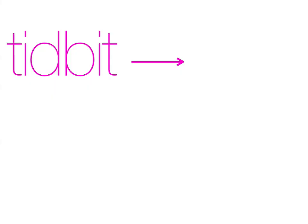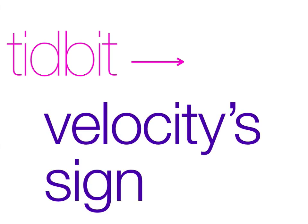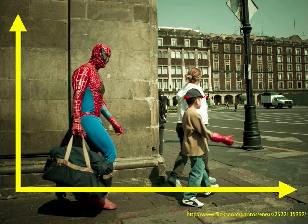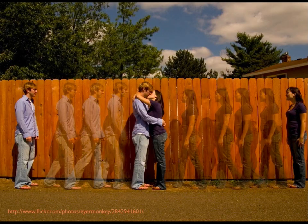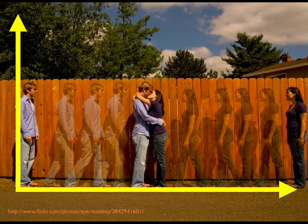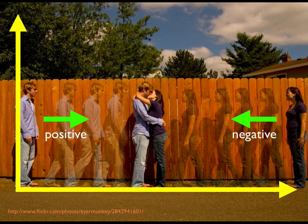So, initial velocity, final velocity, and average velocity. One more velocity tidbit that's important is the velocity sign. Using this picture of a Mexican sidewalk, we'll throw up x and y axes. If we focus on Spider-Man and the little boy, we see they're both walking in the same direction — when two objects move in the same direction, their velocities have the same sign. Spider-Man's velocity is positive and the little boy's velocity is positive. Looking at the next picture, the guy and the girl walk in opposite directions. When two objects travel in opposite directions, one has a positive velocity and the other has a negative velocity. The guy's velocity is positive and the girl's velocity is negative. So: velocity, initial and final velocity, average velocity, and the velocity sign.